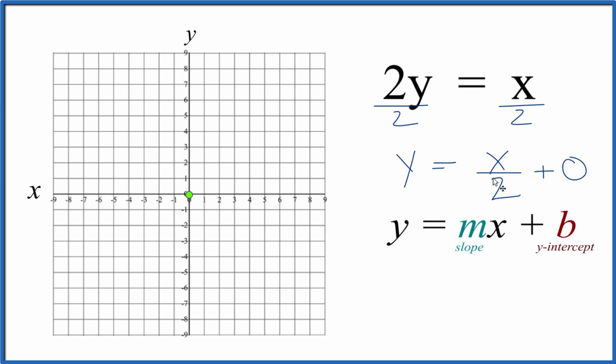Next we have x over 2 as our slope. We could just call this 1x over 2 because then we could say we have rise over run.